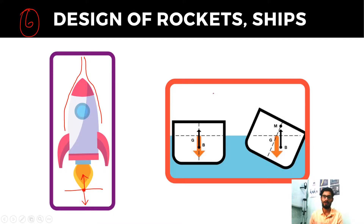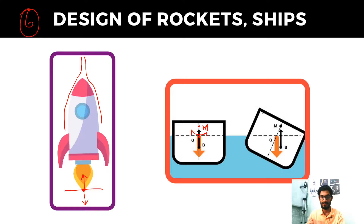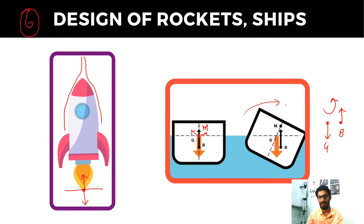For ships, we want the ship to be stable and balanced. This is achieved by designing it so that its metacenter is above its center of gravity. The metacenter is the point about which the ship oscillates. If the ship tilts in one direction, gravity acts downward and the buoyancy force acts upward, creating an anti-clockwise moment that counteracts the clockwise tilt and returns the ship to its upright position.